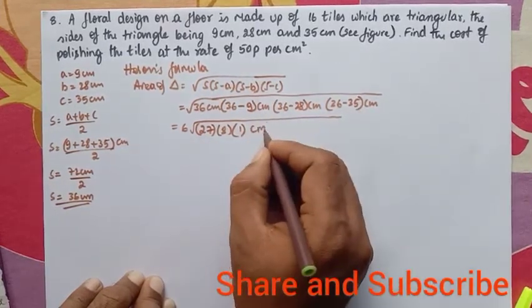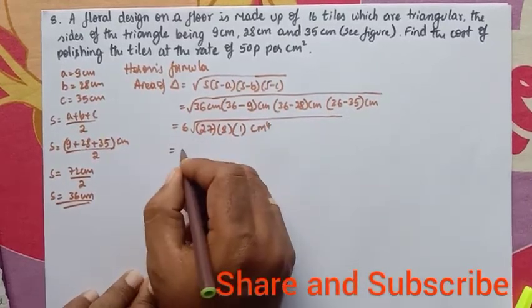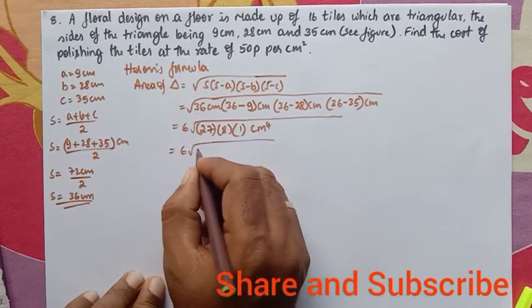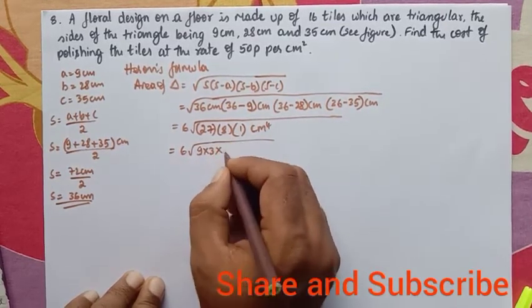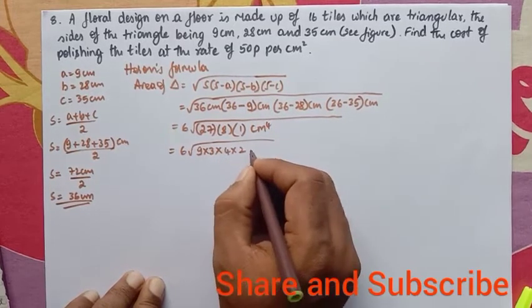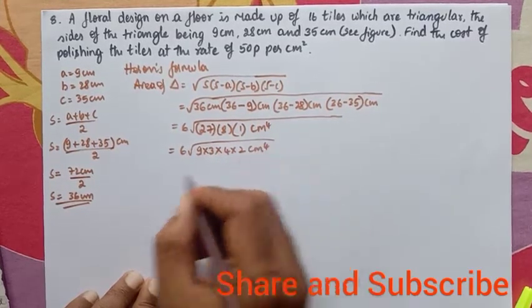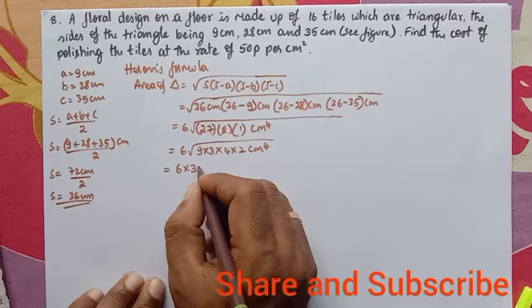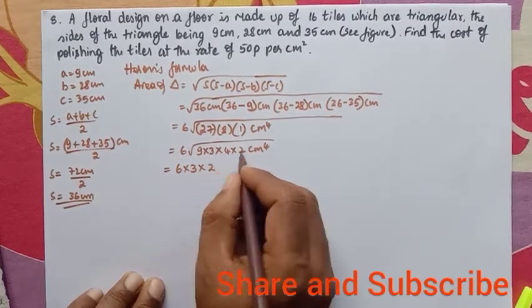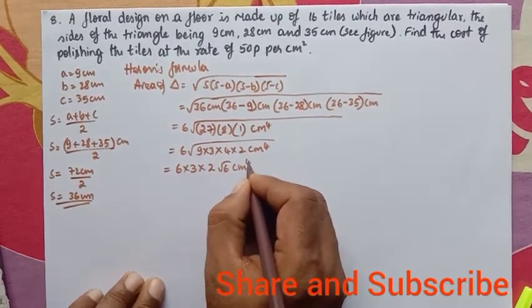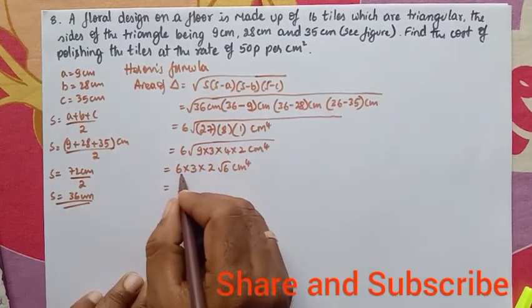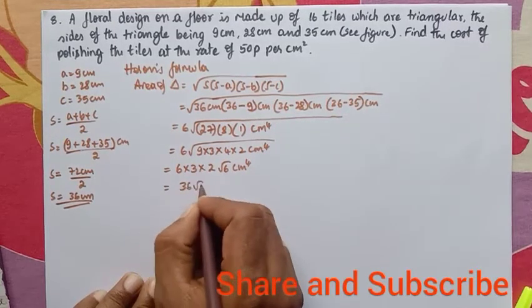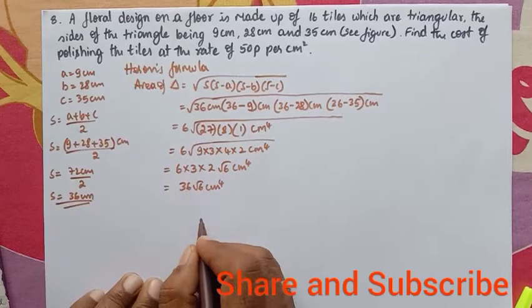We simplify: 27 = 9 × 3, and 8 = 4 × 2. So √(36 × 9×3 × 4×2 × 1) = 6 × 3 × 2 × √6 = 36√6 cm². That is the area of one tile.